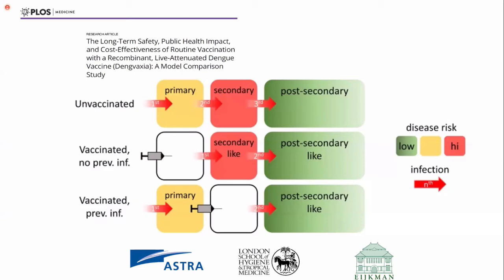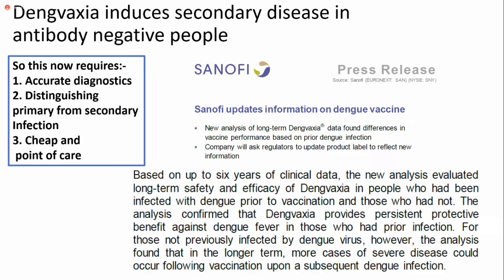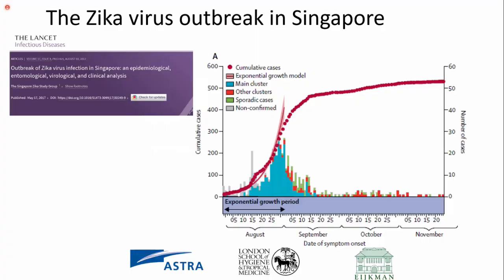But if you're vaccinated, you might skip that primary infection and go straight to a secondary-like disease. Under ideal conditions, if you've already had the disease, you get vaccinated and then miss that secondary disease — so you go directly from your vaccine, which gives you a mild response, and then straight into your post-secondary-like disease process. This has led to a change in vaccine requirements, and WHO now recommends that you only take the vaccine if you already have a history of dengue virus infection.